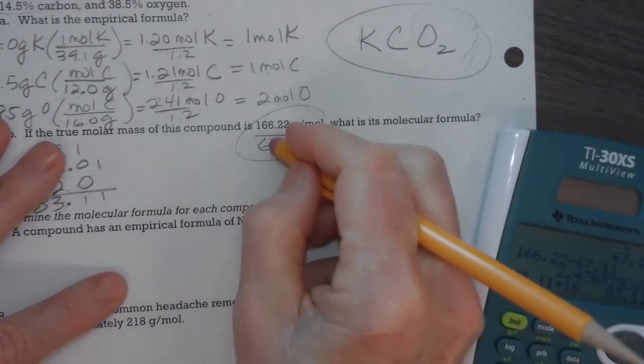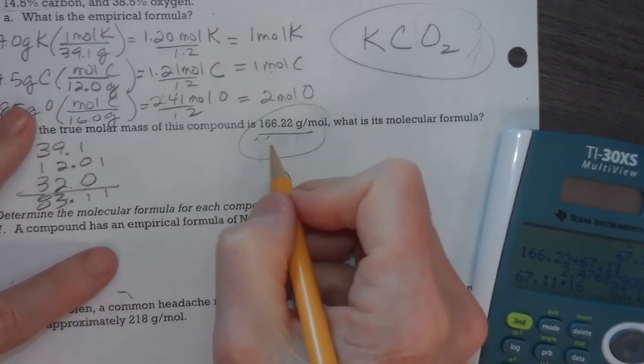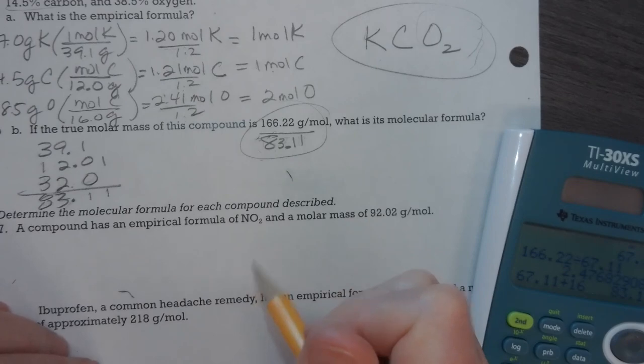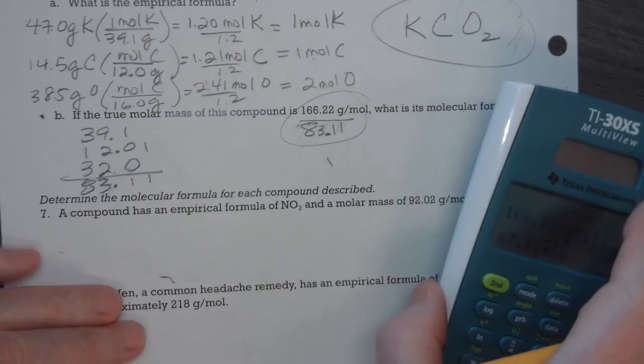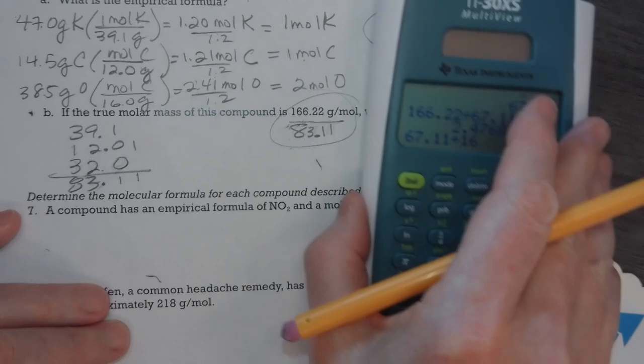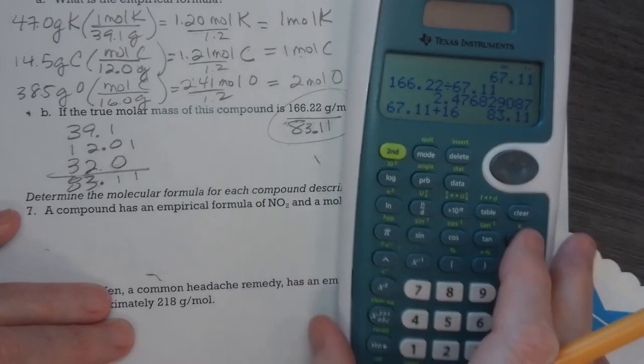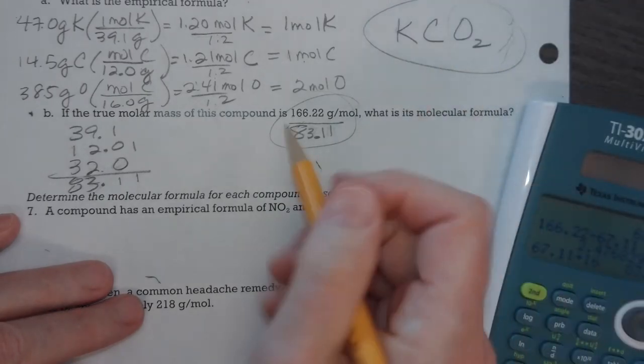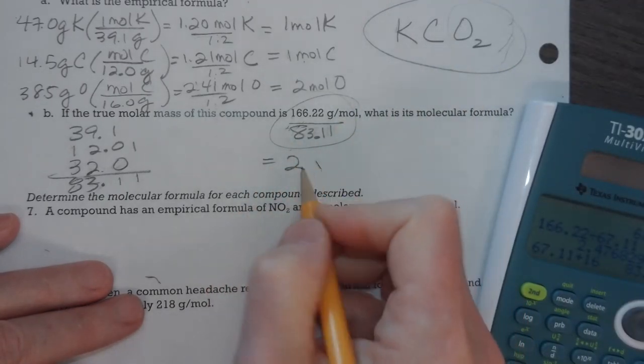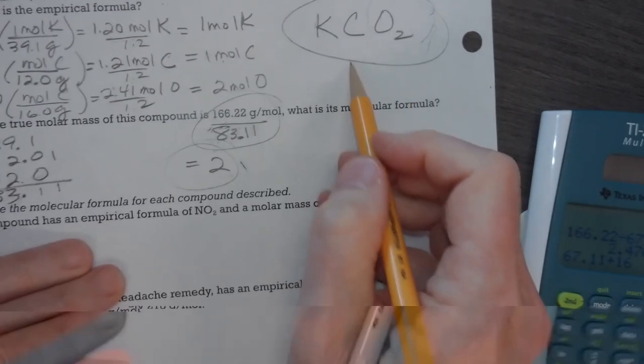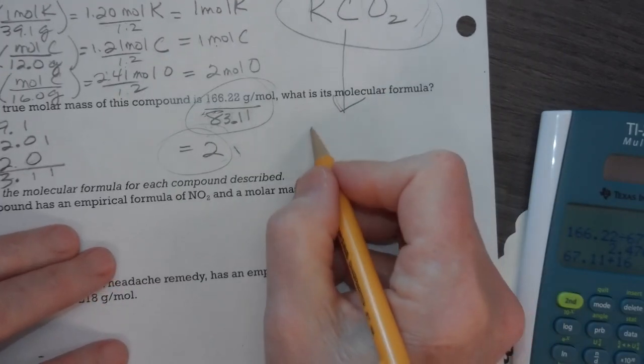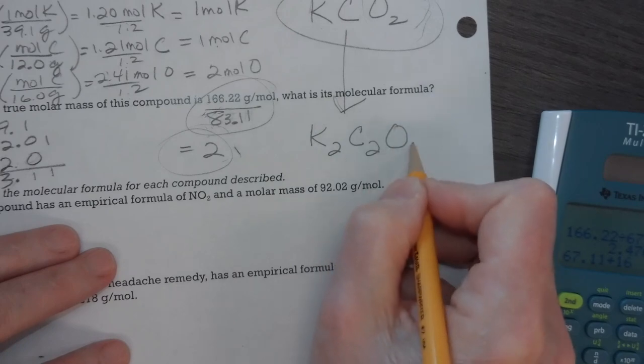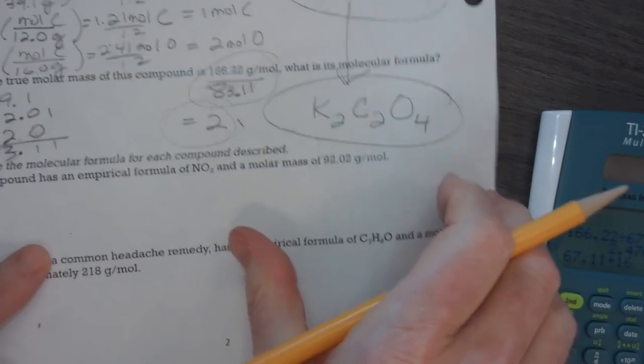Now I'm going to get a lot better answer. So sometimes when you're working, when you say, does that answer make sense? You can actually realize that you made a mistake. And that's what we learn a lot from making mistakes. I can actually see that 83 times 2 is 166.22. So this means that it's 2. So I need to take the subscripts and multiply them by 2. 1 times 2 is 2, 1 times 2 is 2, 2 times 2 is 4.